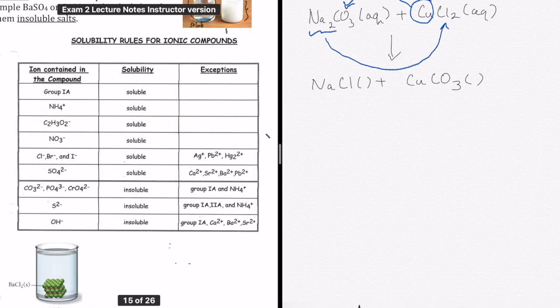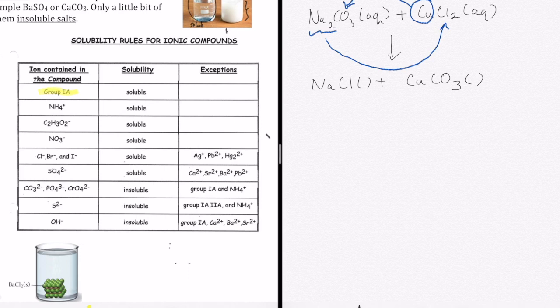So here's our solubility rules shown on the left. And what we need to do is find out whether each of the following products, the ionic compounds or the salts, are soluble or insoluble. If you look at NaCl, that is a group 1A salt because it contains sodium. And as a result, all group 1A is soluble. So we would write this as Aq.